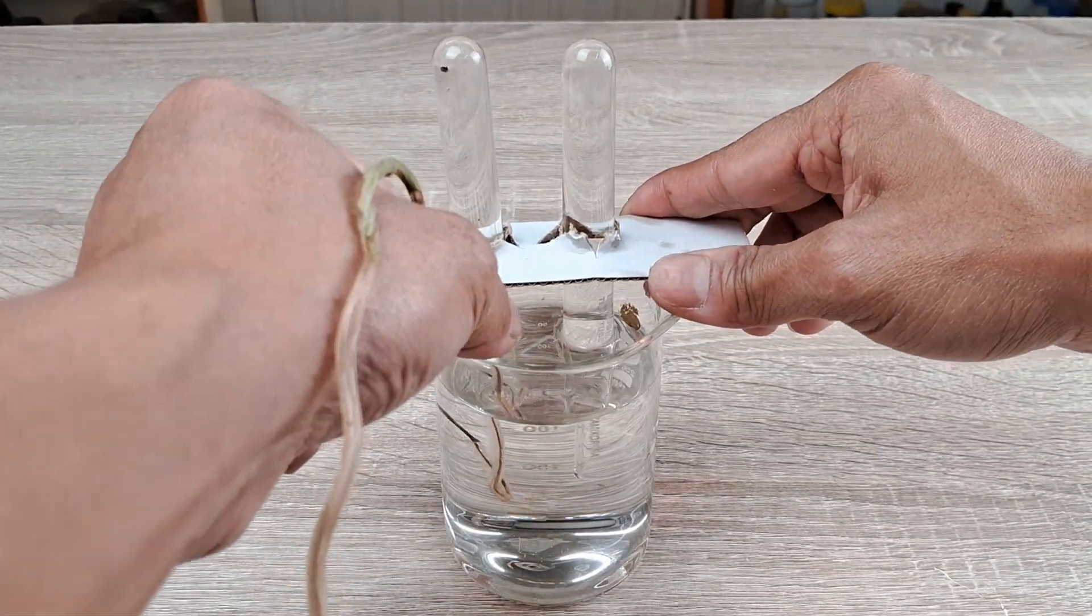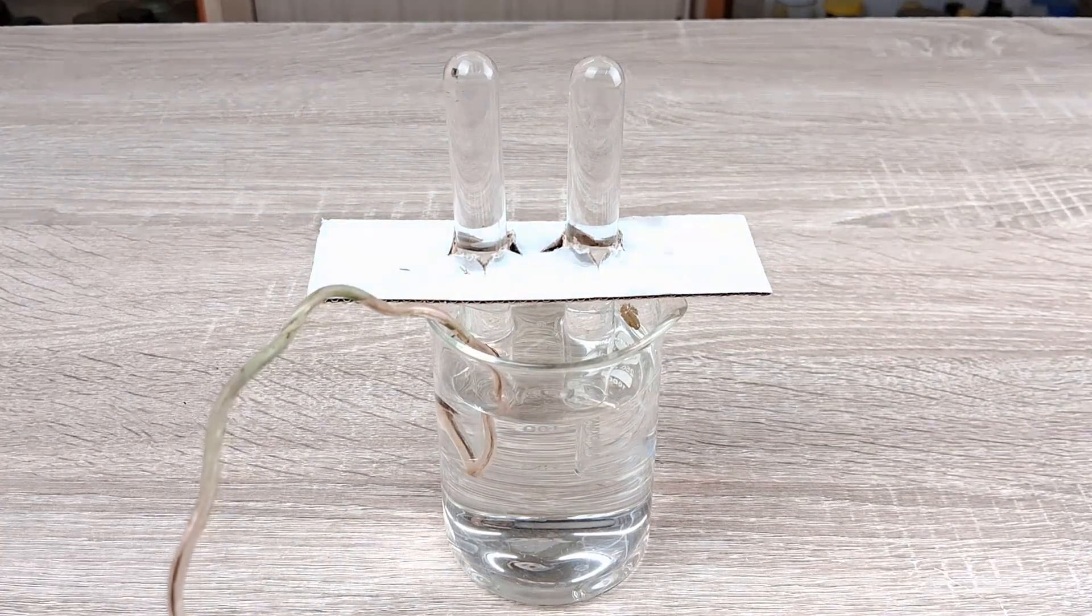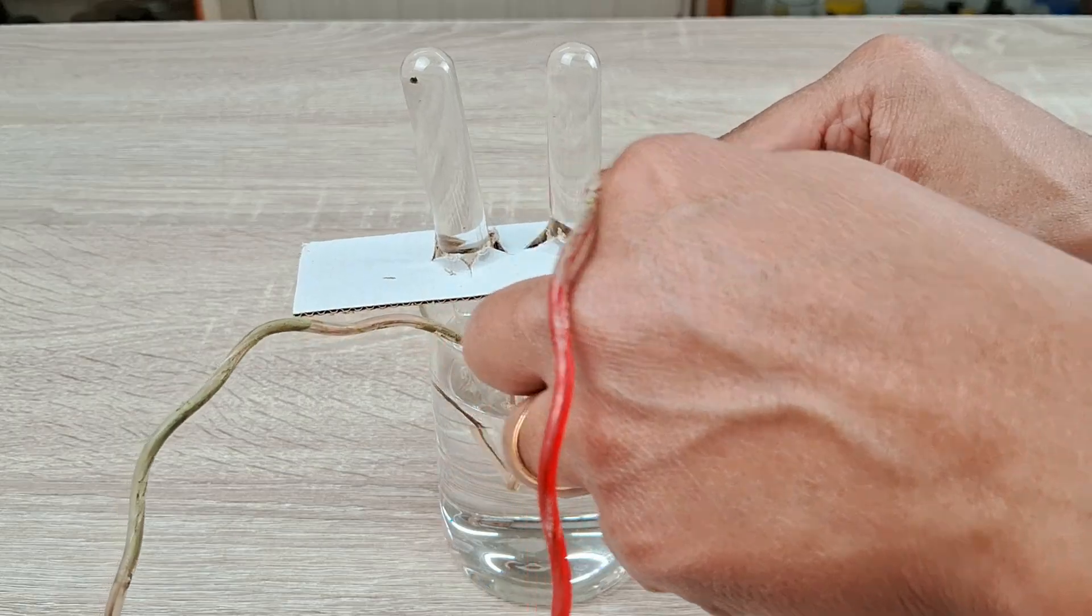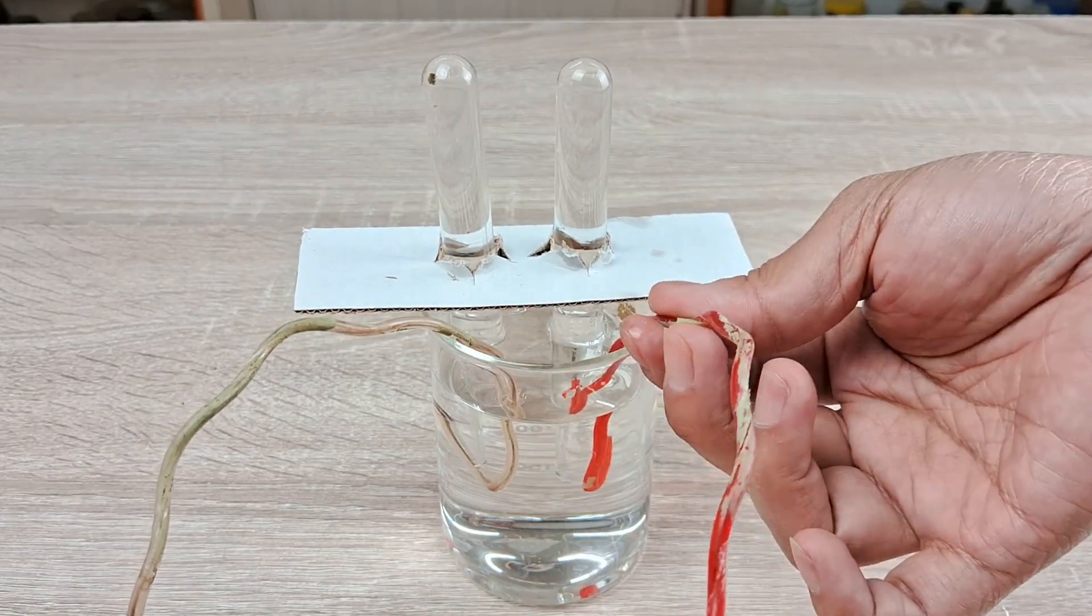Next, take two insulated copper wires and introduce their exposed ends into the mouths of the two test tubes.